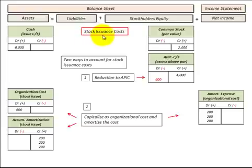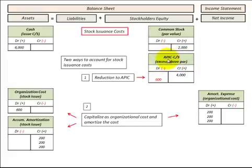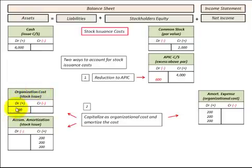One other item to consider is stock issuance costs — the costs involved when issuing common stock. We can handle these in two ways. Number one: directly reduce our stockholders' equity account by debiting or decreasing additional paid-in capital for common stock for the issuing costs. Number two: capitalize it as an asset on the balance sheet and amortize it down — for example, listing it under organizational costs by debiting or increasing that asset account, and then setting up a contra asset account for accumulated amortization of stock issuance costs.